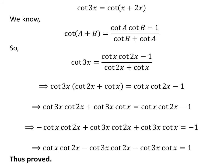Multiplying the above expression by minus 1 gives us: cotangent of x times cotangent of 2x minus cotangent of 3x times cotangent of 2x minus cotangent of 3x times cotangent of x is equal to 1. Thus the given equation is proved.